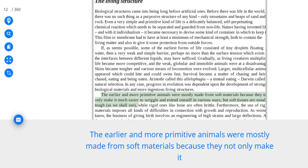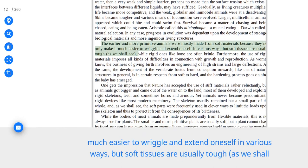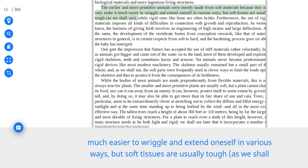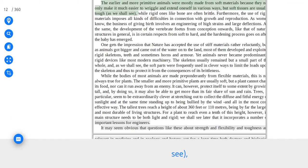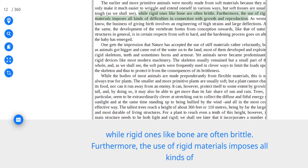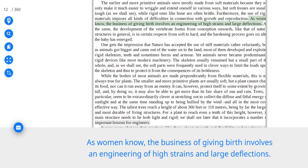In any case, progress in evolution was dependent upon the development of stronger biological materials and more ingenious living structures. The earlier and more primitive animals were mostly made from soft materials because they not only make it much easier to wriggle and extend oneself in various ways, but soft tissues are usually tough, as we shall see. While rigid ones like bone are often brittle. Furthermore, the use of rigid materials imposes all kinds of difficulties in connection with growth and reproduction. As women know, the business of giving birth involves an engineering of high strains and large deflections.